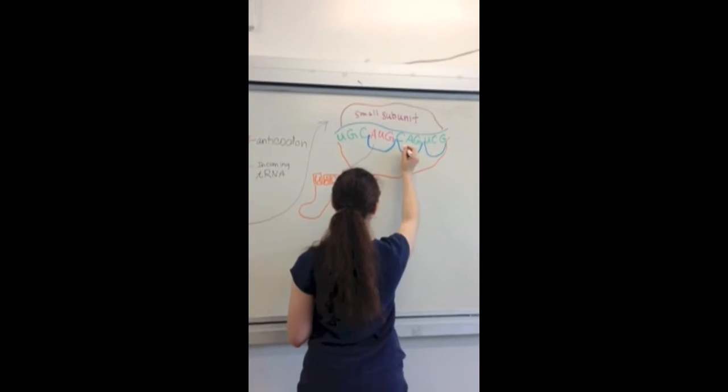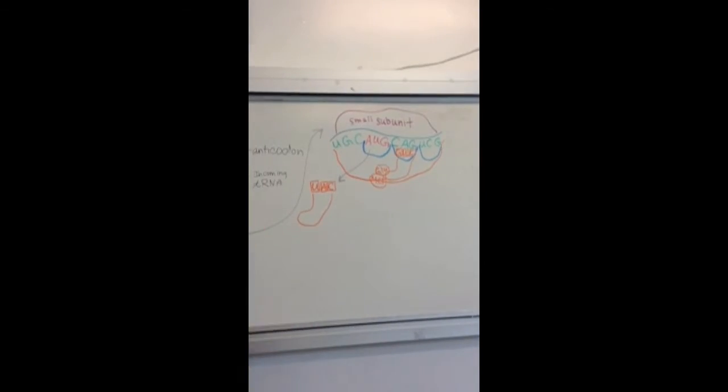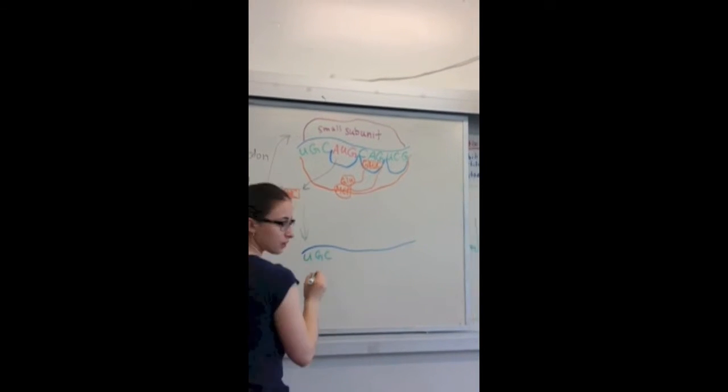After the first tRNA releases its methionine, it moves to the E site and then leaves the ribosome. It moves to the cytosol and becomes charged with another methionine.